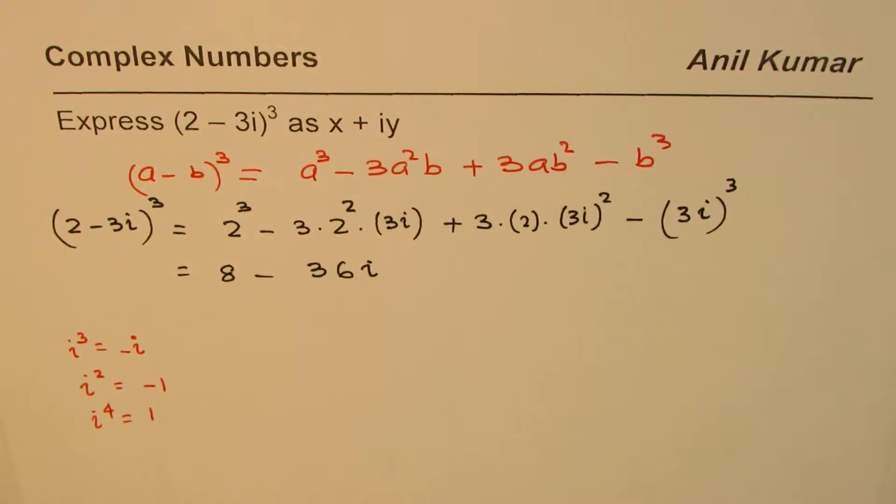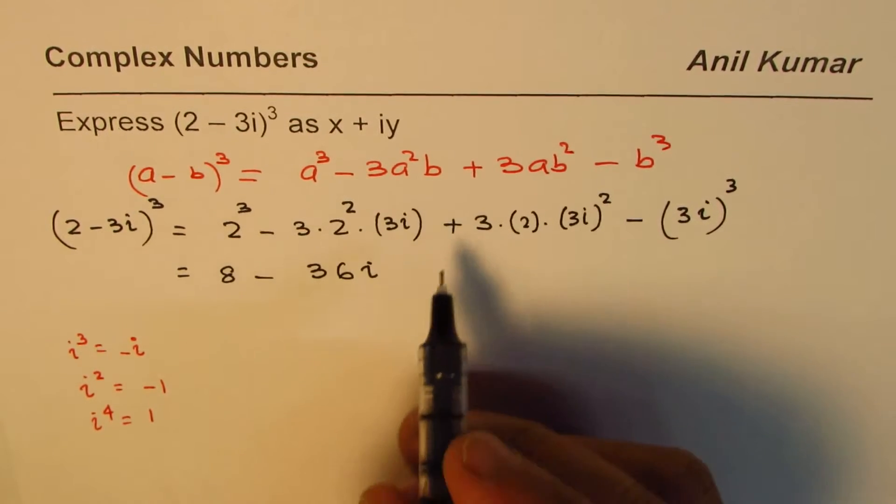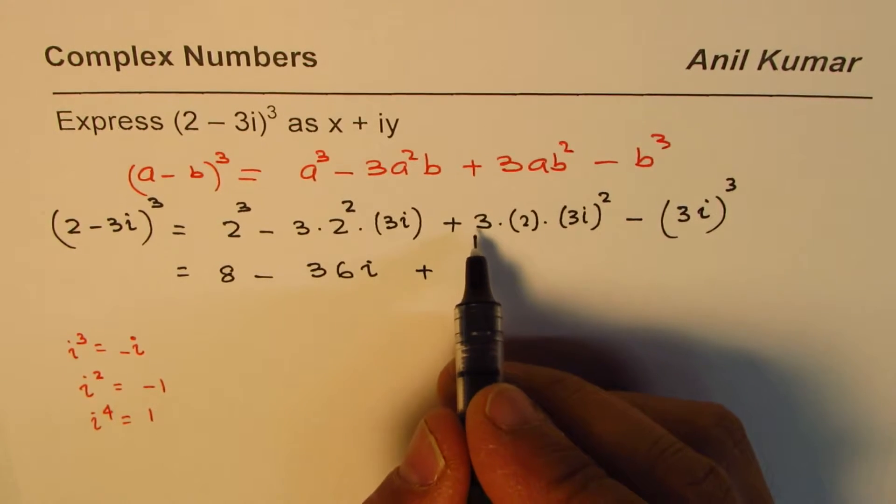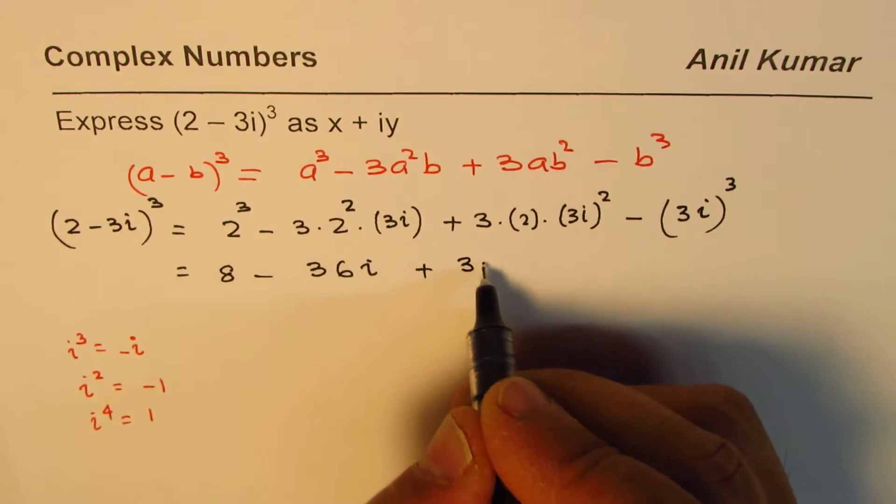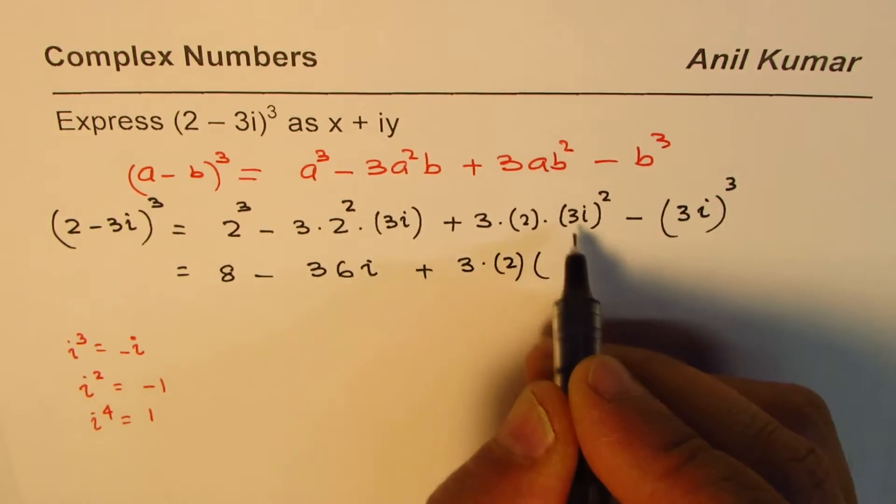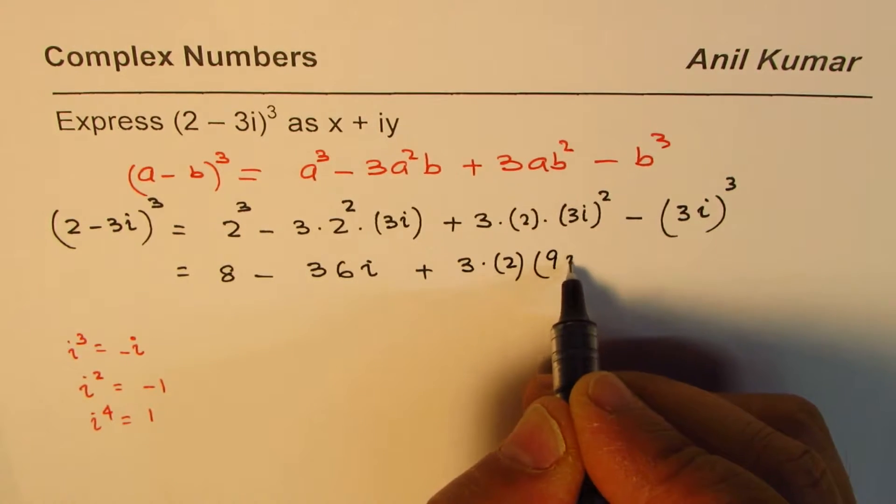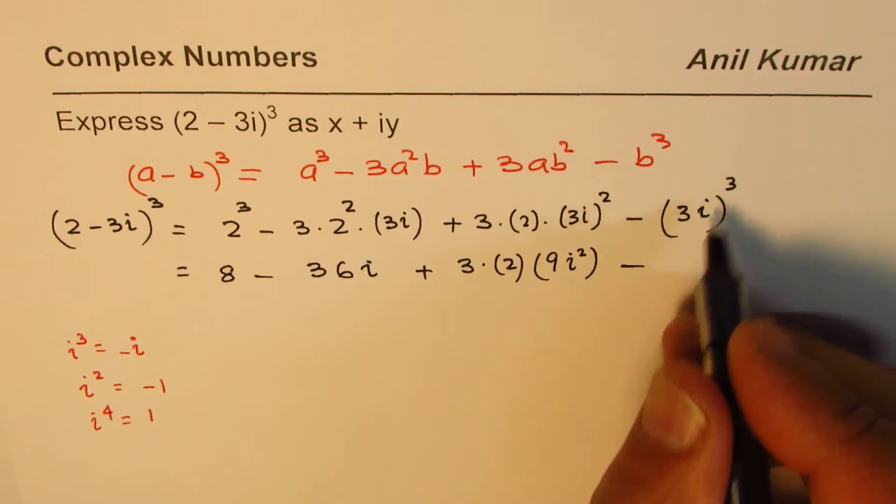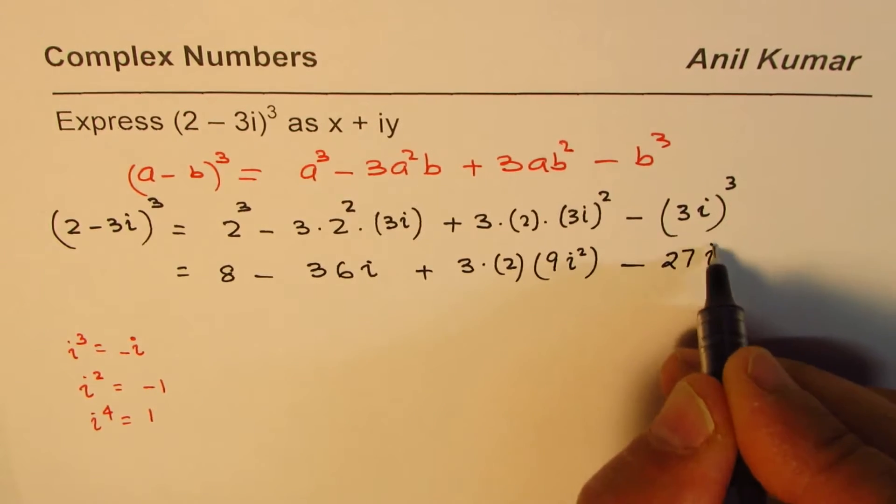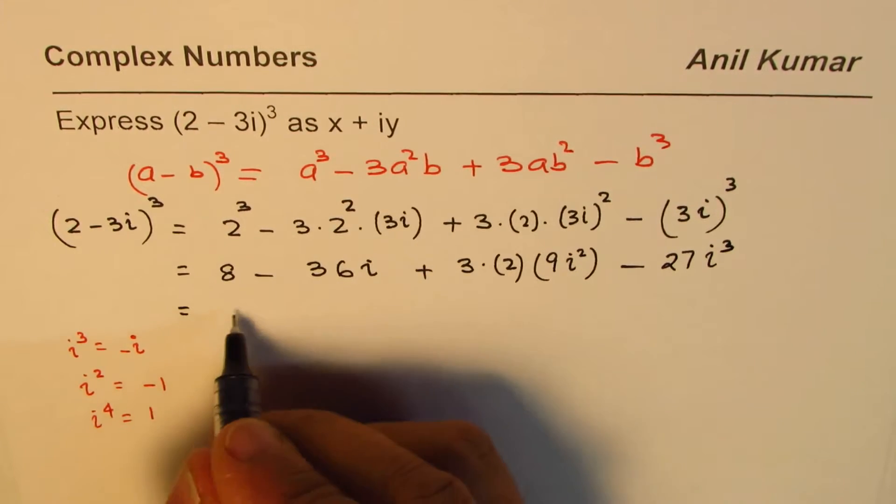So we'll use these expressions. We have plus 3 times 2 times 9i² minus 3 times 27i³.